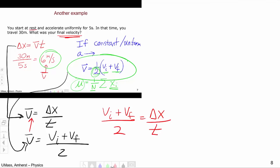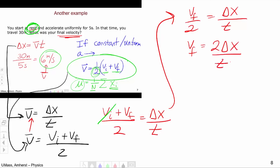So what else do we know? If we go back to our problem we see we start at rest. What do we mean when we start at rest? We mean that our initial velocity is zero. That's what starting at rest means. So carrying that along we got vf over two, delta x over t. So vf is going to be two delta x over t.